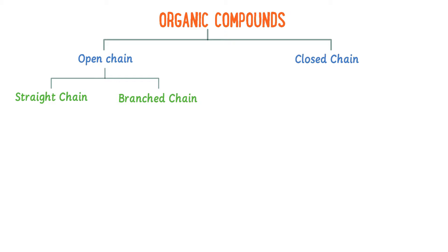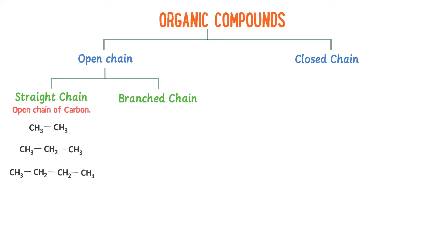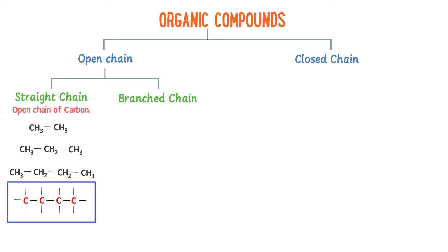Open-chain organic compounds are those compounds which contain open chains of carbon atoms in their molecules. For example, ethane, propane, butane, etc. In these molecules, carbon atoms are joined together in a straight chain.